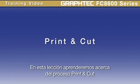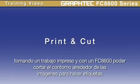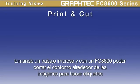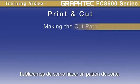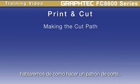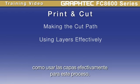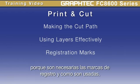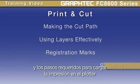In this lesson, we'll learn about the print and cut process, taking a print off your printer and having the FC8600 contour cut around the images on the print for making decals. We'll cover how to make a contour cut path, how to use layers effectively for this process, registration marks, why they are needed and how they are used, and then the steps required to load the print onto the cutter.